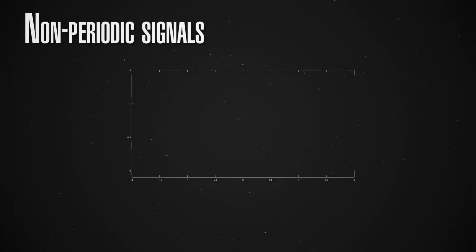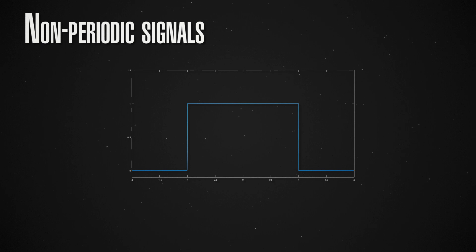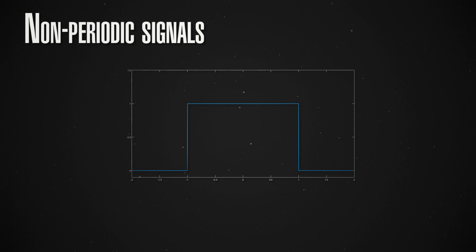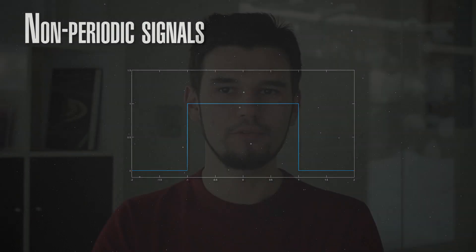The real question we might be asking ourselves after all of the lessons we already had is how to represent a signal — how to apply what we learned from Fourier series to a general signal, a non-periodic function like this rectangular signal we're seeing here. Suppose we have a wave packet, not a wave like we saw before but a wave packet — only a localized solution to a wave equation, for example a rectangle. How do we represent this?